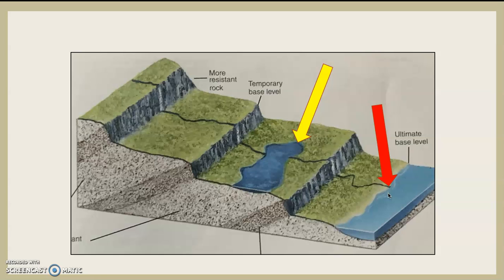If you see where the yellow arrow is pointing, that yellow arrow is pointing at a lake. That lake acts as a temporary base level for that river system. So, all the time, rivers are trying to reach base level.